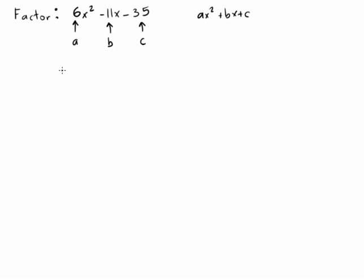So for AC method, the first thing you do is compute AC, or in other words, A times C. In this problem, it's 6 times negative 35. Now multiply that out. That's negative 210.